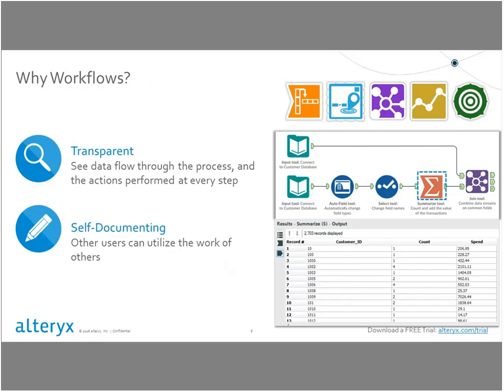So let's talk about how a workflow can help overcome some of these challenges. The first thing we always talk about when you look at a workflow process is it's transparent — you can easily understand what's taking place throughout each step of that analytic process. In many workflow environments there are different icons or tools that people can look at to have a sense of what's going on at each step. In Alteryx, these tools are color-coded to reflect the type of processing taking place — data preparation, data transformation, joining or union processes, and so on. This self-documenting process allows others to utilize someone else's workflow with ease.